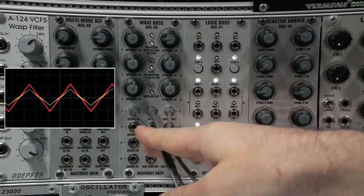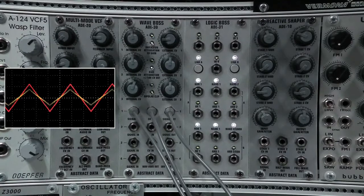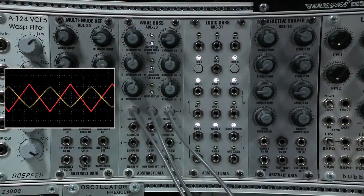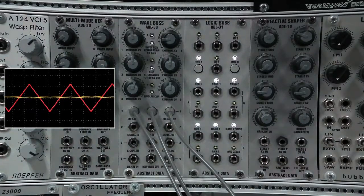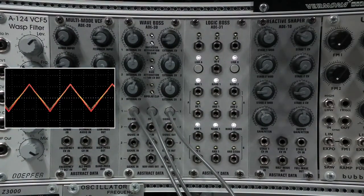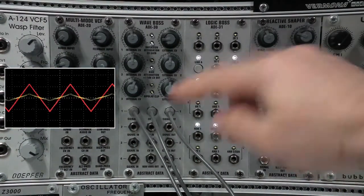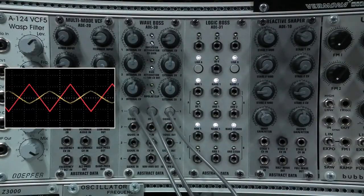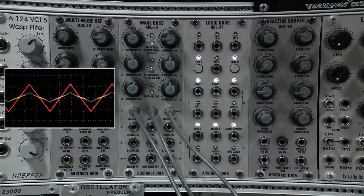So in this first patch we're using the first stage of the ADE30 and we're using the voltage controlled attenuversion. We're taking an input signal which is the triangle waveform that you can see on the scope shot there and we're using an LFO into the CV input to cycle through inverted and non-inverted forms of the waveform.